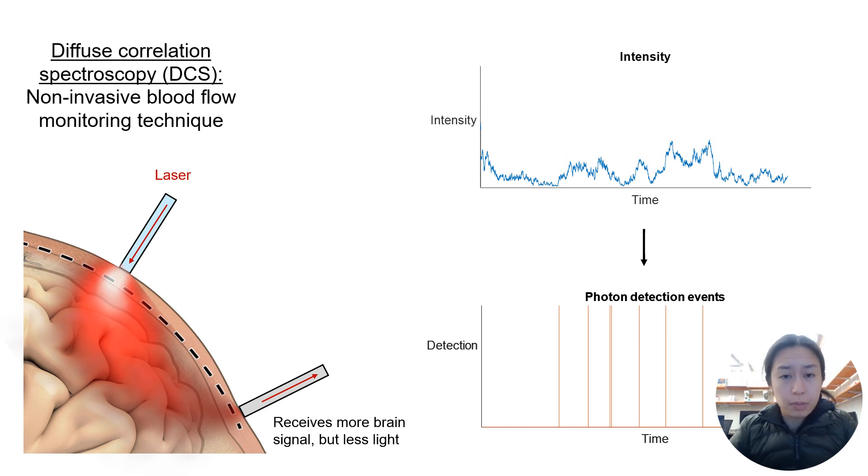Moving the detector further from the source allows for more brain sensitivity but less light. Here, the photon detection events will be very sparse and we will have to integrate the signal for a longer period to be able to recover blood flow.